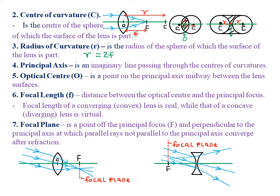If you take focal length plus another focal length, you will simply get the radius of curvature, because the radius of curvature is the distance O to C, while the distance O to F represents the focal length. The distance from F to C will always be equal to the focal length. Therefore, we can simply conclude that the radius of curvature will always be equal to twice the focal length of either a concave or a convex lens.